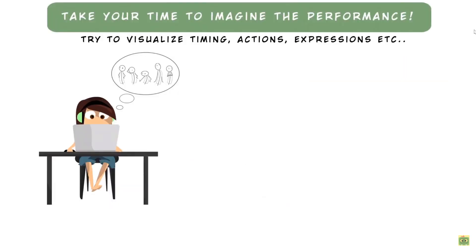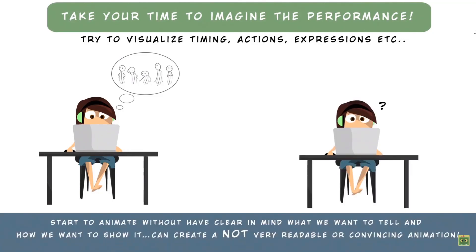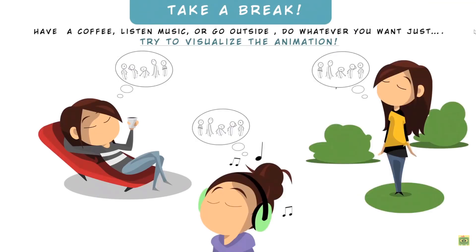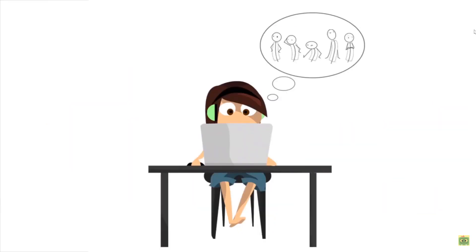Take your time to imagine the performance before you start to animate. Try to visualize the character's movements, gestures, and expressions. Starting to animate without having a clear idea of what you want to tell and how you want to show it can create animation that isn't readable or convincing. So take a break, have a coffee, listen to music, or go outside — just try to visualize the animation. I always see the animation in my mind first, so when I start to animate I already have a clear idea of what to do and how to do it.